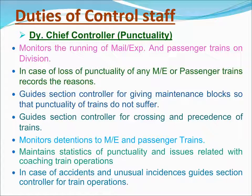The Deputy Controller (Punctuality) monitors the running of mail, express, and passenger trains on the division. In case of loss of punctuality, records the reasons. Guides section controllers for giving maintenance blocks so that punctuality is not affected. Guides section controllers for crossing and precedence of trains. Monitors detention of mail, express, and passenger trains. Maintains statistics of punctuality and issues related with coaching train operations. In case of accidents and unusual incidents, guides the section controller for train operations.